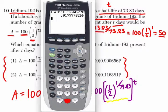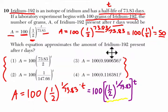So 0.5 is one-half to the power of, I'm going to put it in brackets here, 1 divided by 73.83. And there's 0.990655. So it is this choice right here, 100 times 0.990656 to the T power.